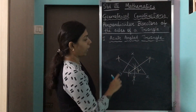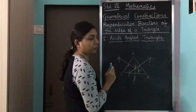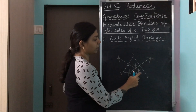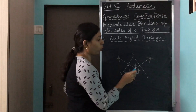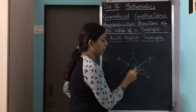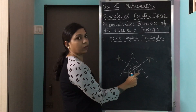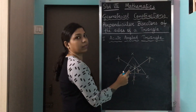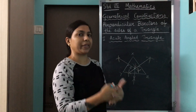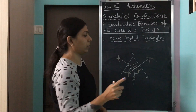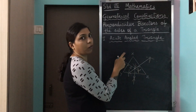Now after we have drawn the perpendicular bisectors for all three sides, we see that these three perpendicular bisectors are all meeting each other in one single point. Let's name it point C. This perpendicular bisector, this perpendicular bisector, and this perpendicular bisector — all three are coming together and meeting each other in one single point. That point is called the circumcenter of the triangle.